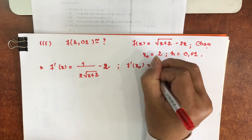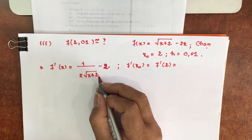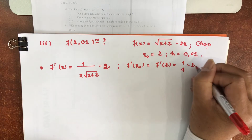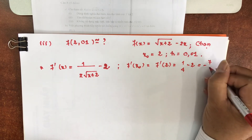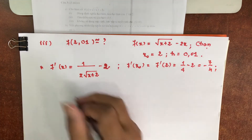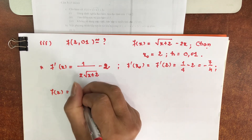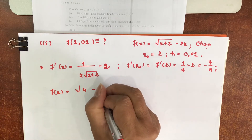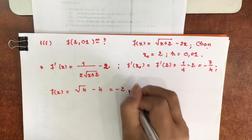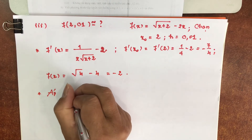F'(x₀) tức là F'(2). 2 cộng 2 là 4, căn bậc 2 của 4 là 2, nhân với 2 là 4, một phần từ trừ 2. 1 trừ 8 là trừ 7 chia 4. Rồi F tại 2: căn bậc 2 của (2+2) là 4 trừ đi 4 trừ 2. Áp dụng công thức xấp xỉ tuyến tính ta có.